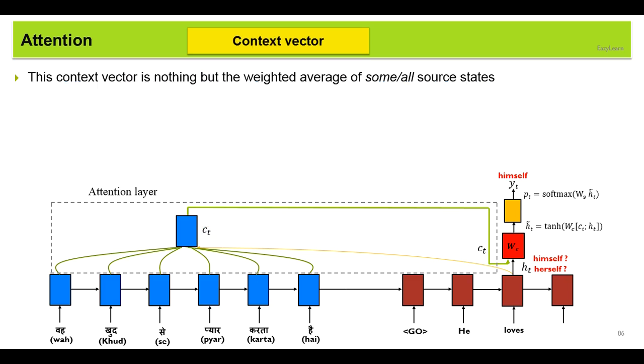Now what is this context vector? This context vector is nothing but the weighted average of some or all source states. If you're talking about global attention, this would be the weighted average of all source states. And if you're talking about local attention, it would be the weighted average of some source states.